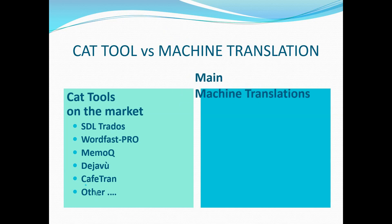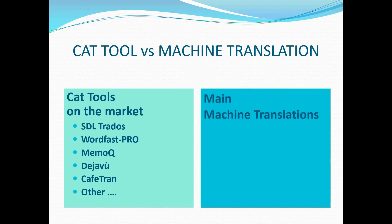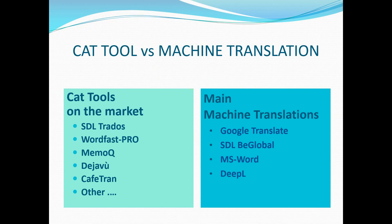What are the main machine translations that we can find? The most popular one is probably Google Translate. Then we have SDL BeGlobal and then Microsoft Word machine translation. Another one that is very popular today is DeepL, but we also have MyMemory and here as well we have many other machine translations.